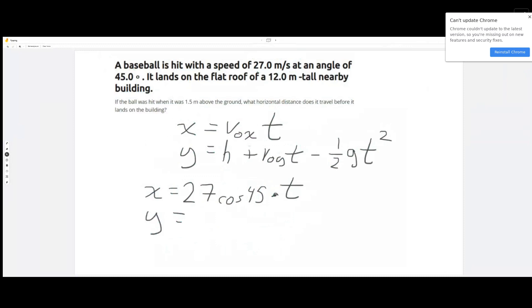Plus the initial y velocity times time, minus—now assuming we're on Earth here and gravity is 9.8—then one half of 9.8 is going to be 4.9 t squared.